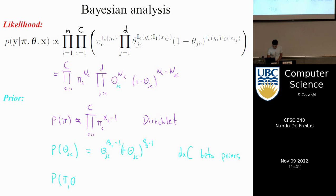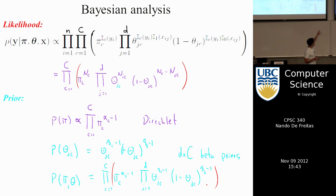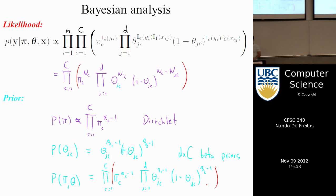My joint prior over π and θ will be the product from c=1 to C of π_c^(α_c minus 1) times the product from j=1 to D of θ_jc^(β_1 minus 1) times (1 minus θ_jc)^(β_2 minus 1). A priori, I believe everything is independent so I just multiply. As you can see, my likelihood and my prior have the same shape, so when I multiply them I just need to sum the exponents — just like with the coin model.